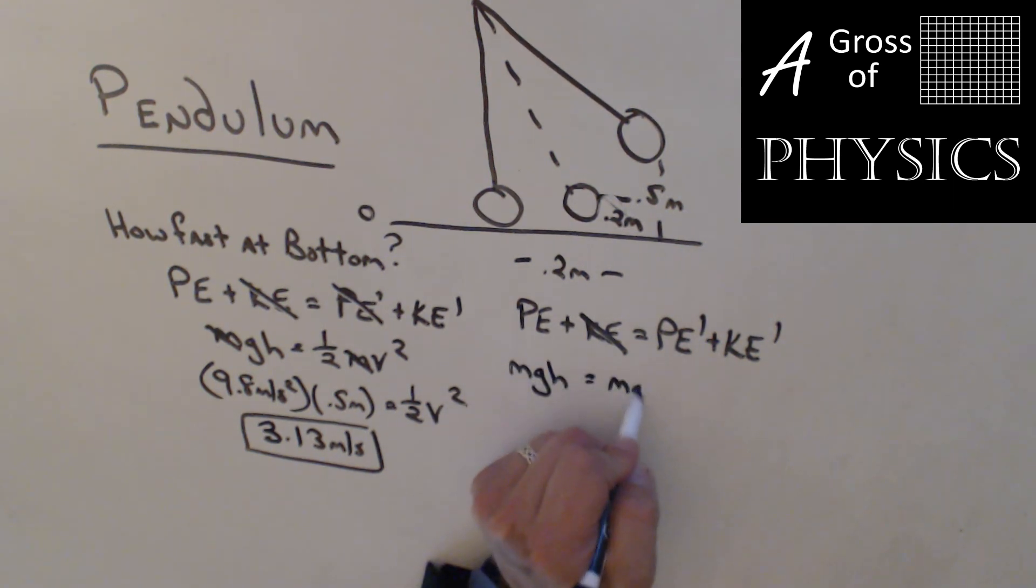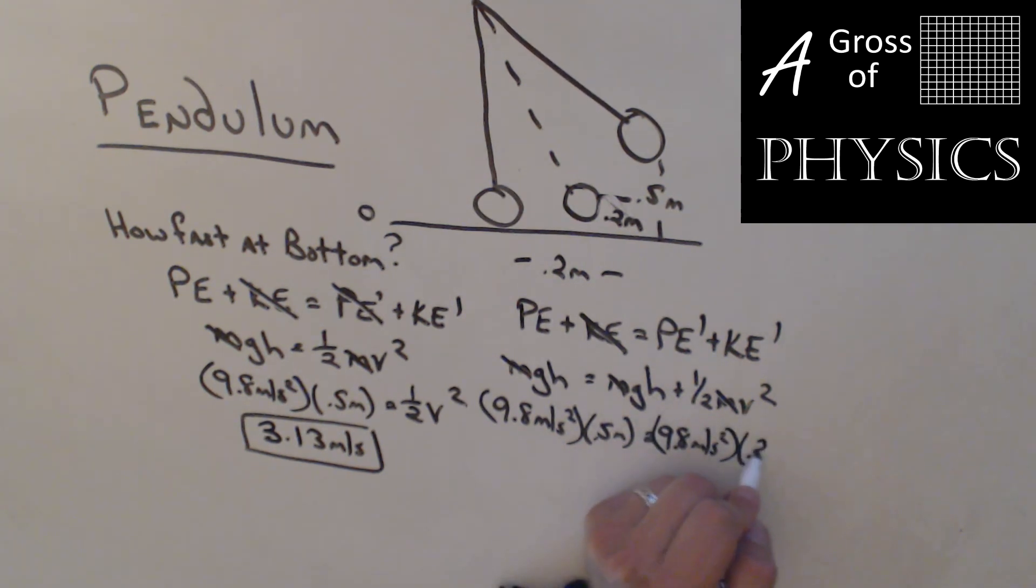Still m in every term, so that cancels. So you do 9.8 times the height, which was 0.5, equals g, 9.8, height of 0.2, plus one-half mv squared. So 9.8 times 0.5 minus quantity of 9.8 times 0.2, close parentheses, divided by 0.5, and take the square root, and we get a speed of 2.42 meters per second.